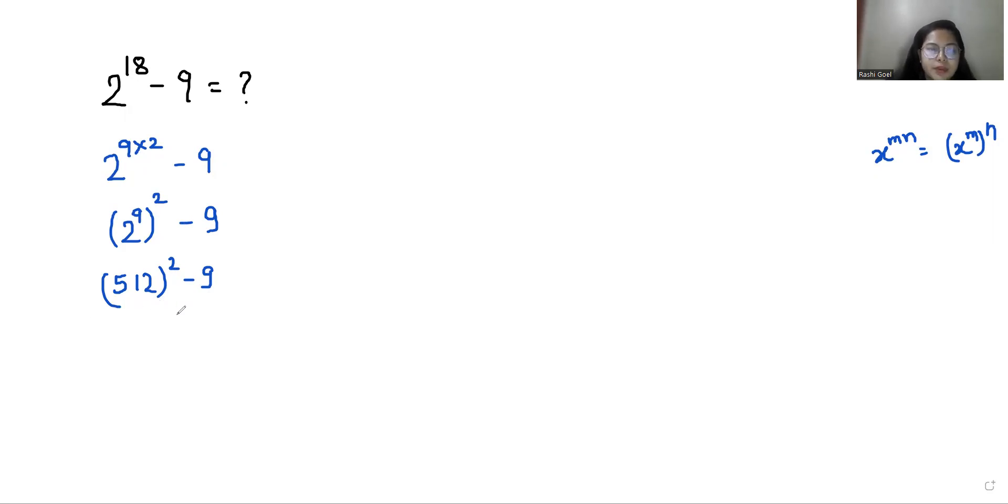I can write 512 as 500 + 12, so we have (500 + 12)^2 - 9. I'm going to use the formula (a + b)^2 = a^2 + b^2 + 2ab, where a is 500 and b is 12.